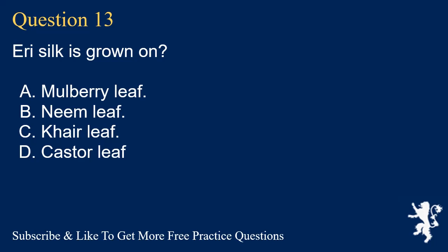Question 13. Eerie silk is grown on? A. Mulberry leaf. B. Neem leaf. C. Care leaf. D. Castor leaf. Answer: D. Castor leaf.